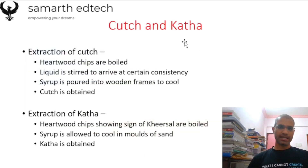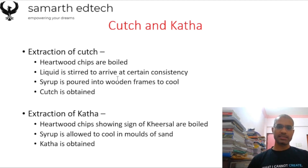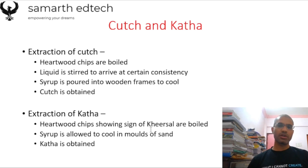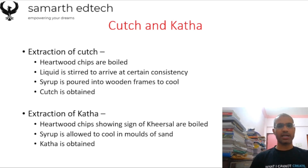The next topic is kach and kattha, which are non-timber forest products. For kach extraction: hardwood chips of Acacia catechu are boiled, the liquid is stirred to a certain consistency, the syrup is poured into wooden frames and cooled to obtain kach. For kattha: hardwood chips of Acacia catechu containing khir sap are boiled, and the syrup is cooled in sand molds to obtain kattha.